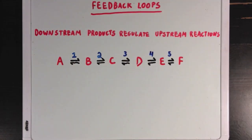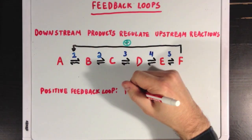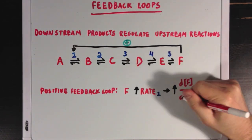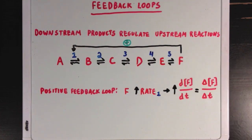Now, let's say that molecule F acted as an activator for the enzyme powering reaction 1. So, it had a positive effect on enzyme 1's activity. Now, we would call this a positive feedback loop, since molecule F increases the rate of reaction 1, which then causes even more F to be made, since we've increased the rate of formation of molecule F.